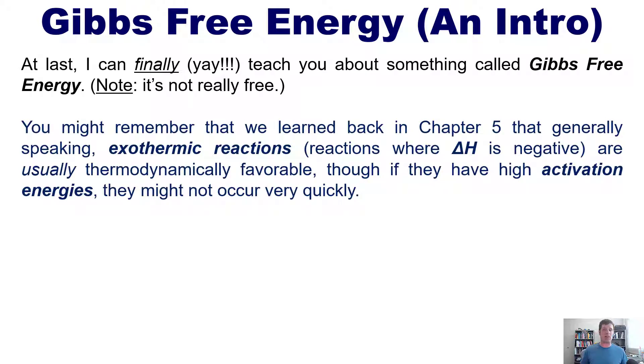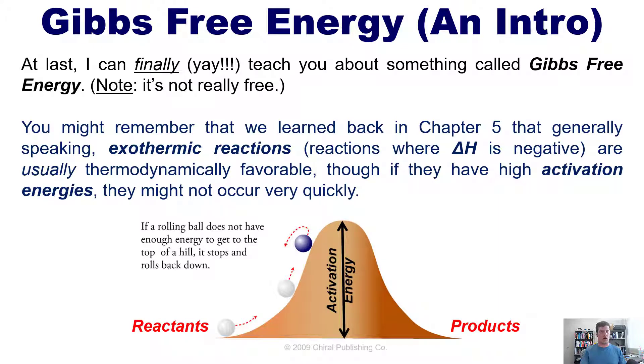You might remember that we learned back in chapter 5 that generally speaking exothermic reactions, that is reactions where delta H or change in enthalpy is negative, are usually thermodynamically favorable, though if they have high activation energies as depicted in this figure, they might not occur very quickly.